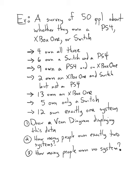We also know 13 own an Xbox One, five own only a Switch. Think about the difference between these two statements. And finally, we also know 12 own exactly one system.